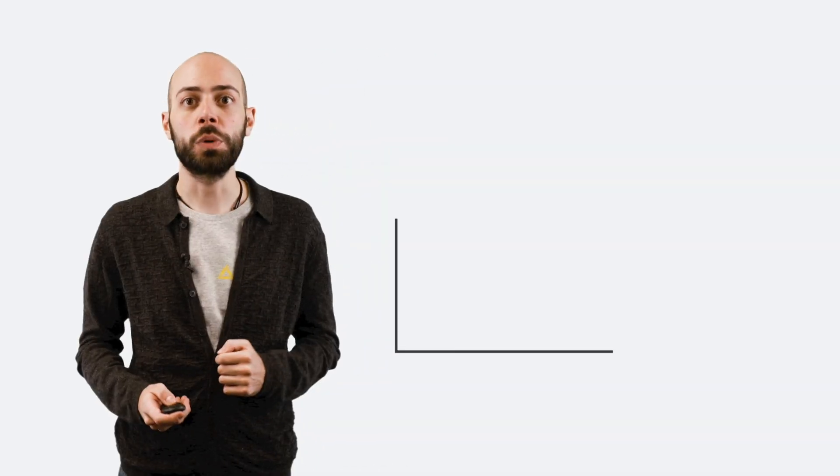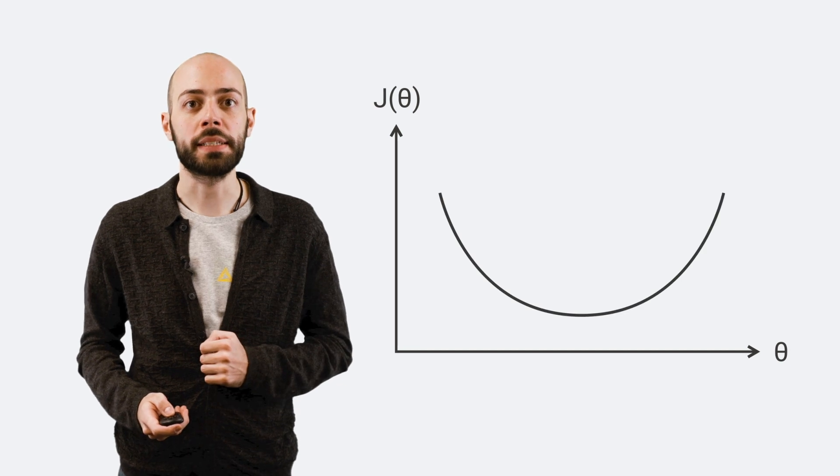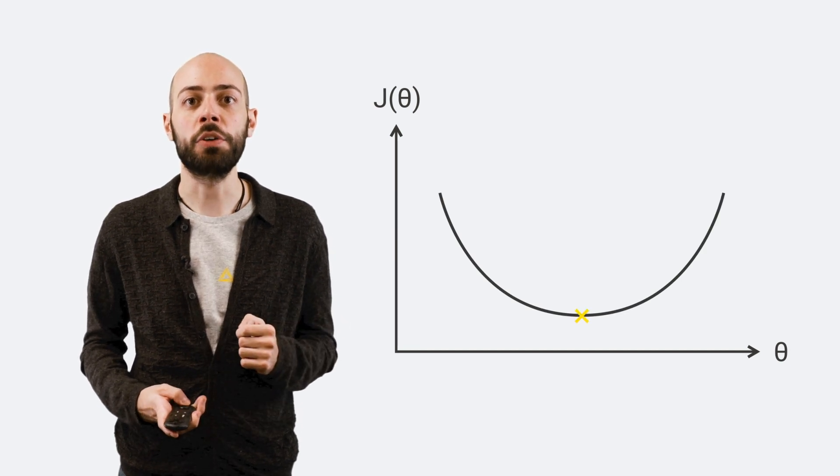Gradient descent works as an iterative process with the goal of finding the model parameters that lead to the minimum value of a given cost function.